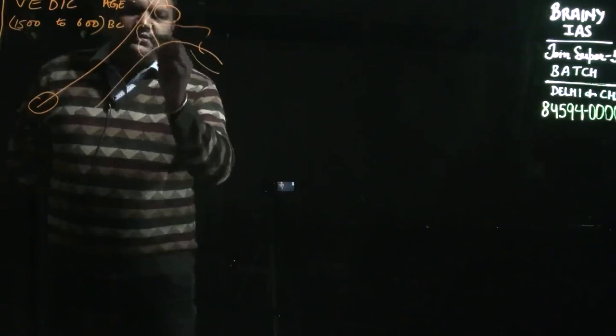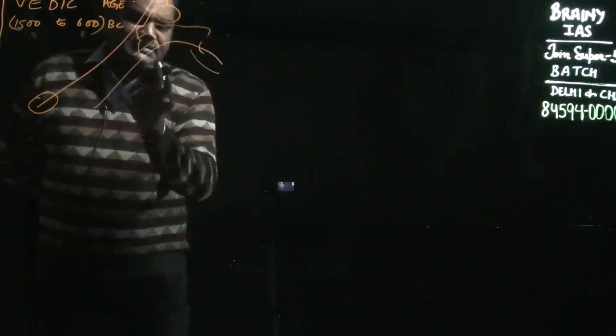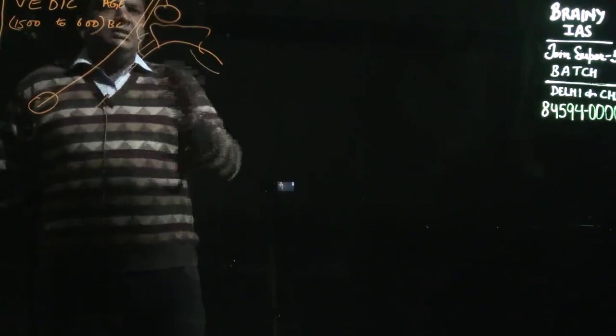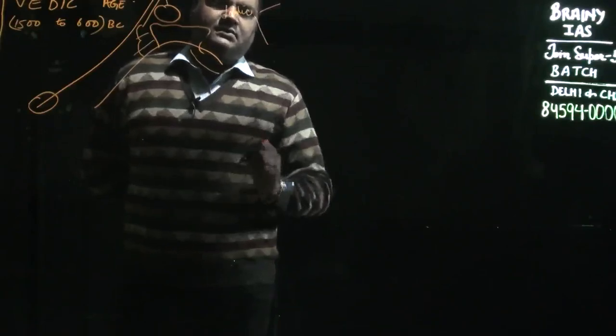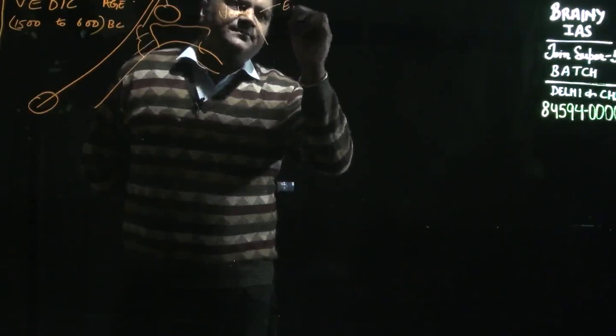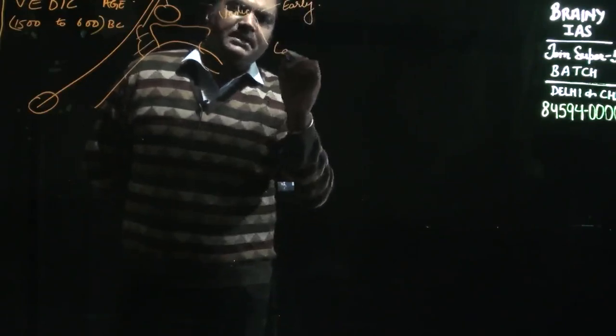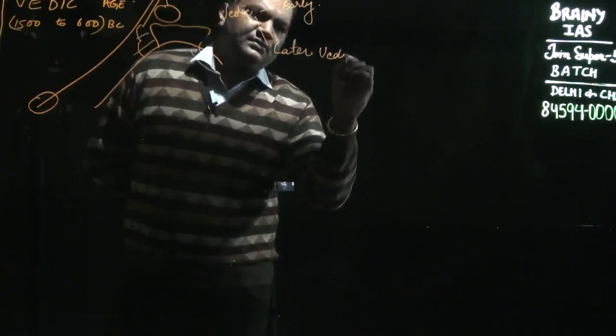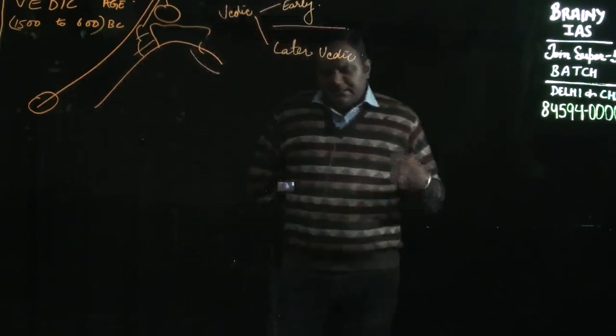The Aryans which came to India after crossing Hindu Kush mountain and Suleiman range settled here. This entire part is known as the Vedic Age, divided into two parts: Early Vedic Age and Later Vedic Age.